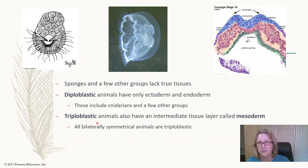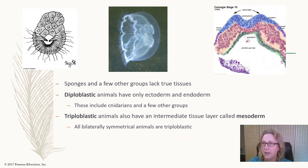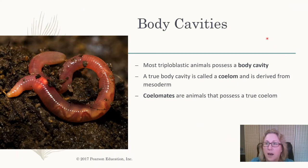Triploblastic animals — which is most animals — have three layers. Looking at a slice through an embryo: the ectoderm (blue) forms the skin and nervous system, the endoderm (green) forms the lining of the gut, and the mesoderm forms the muscles, bones, and blood.